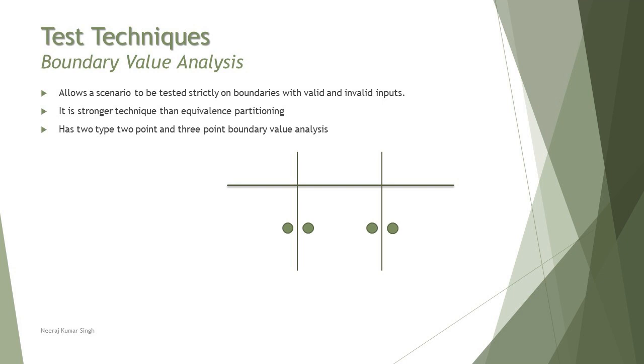In the following diagram, you are looking at basically a two-point boundary value analysis, whereas if you talk about three-point boundary value analysis, you would have three values on each boundary. For more details, you can look up the card. The card will take you to the previous tutorial on foundation-level boundary value analysis to understand the same in more detail.